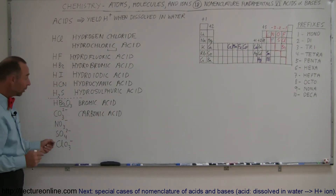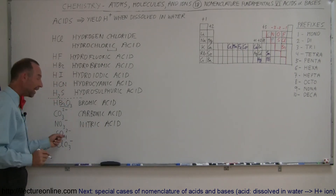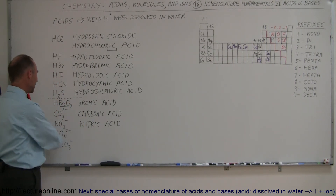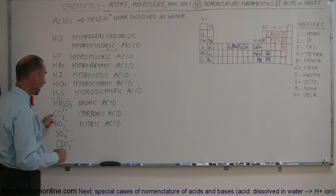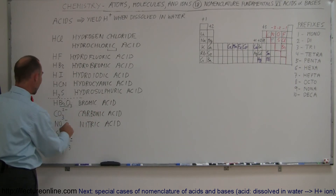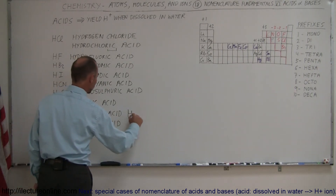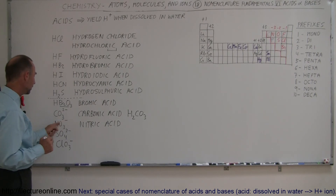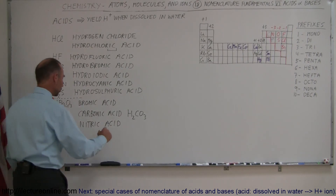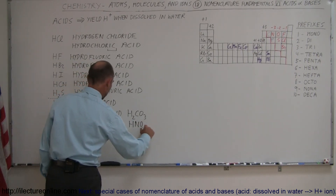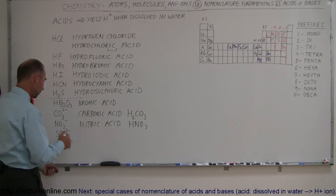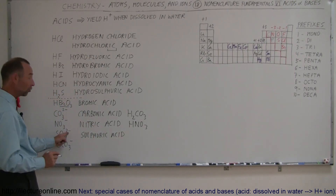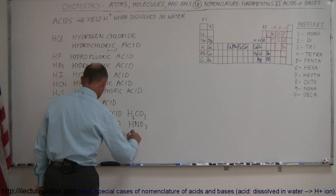We have the nitrate ion, so we call that nitric acid. We have the sulfate ion, so we call that sulfuric acid. Now, to actually form the acid we need to add hydrogen to it. For carbonate — which is a minus-two ion — we add two hydrogens, giving us H₂CO₃, carbonic acid. For nitrate — which is minus one — we add one hydrogen, giving us HNO₃, nitric acid. For sulfate — which is minus two — we add two hydrogens, giving us H₂SO₄, sulfuric acid.